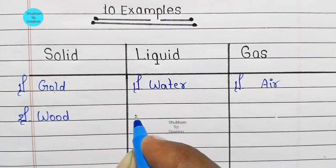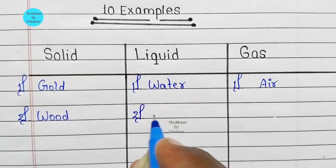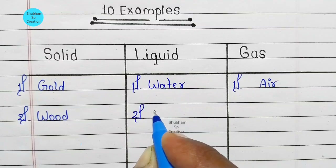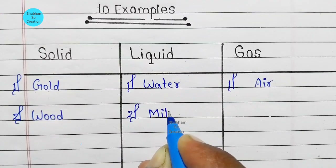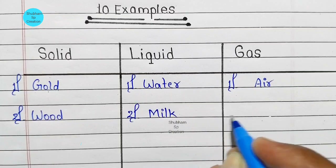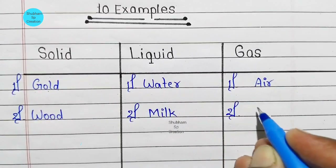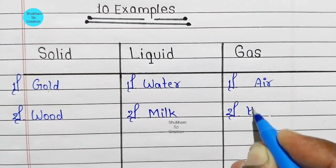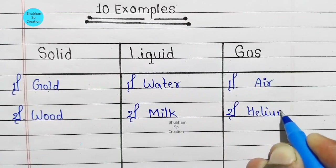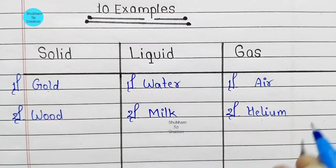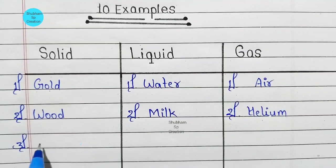Second number: liquid — milk. Second number: gas — helium.